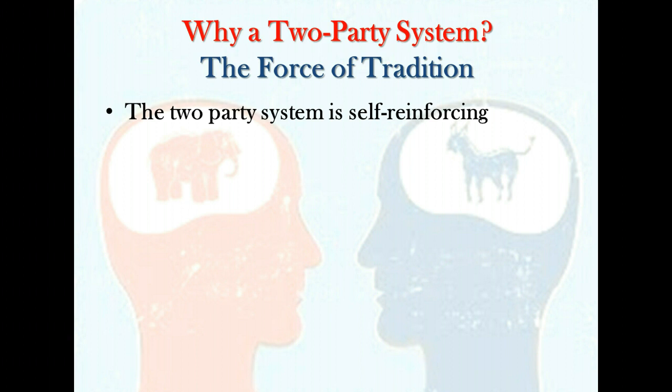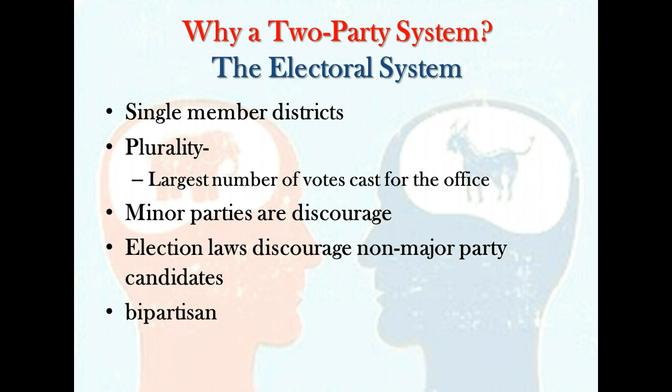The electoral system: several features of the American electoral system tend to promote the existence of but two major parties. The prevalence of single-member districts is one of the most important. Nearly all elections held in this country are single-member district elections — contests in which only one candidate is elected to each office. In these winner-take-all elections, the winning candidate is the one who receives a plurality, or the largest number of votes cast for the office. Note that a plurality need not be a majority, which is more than half of all votes cast.